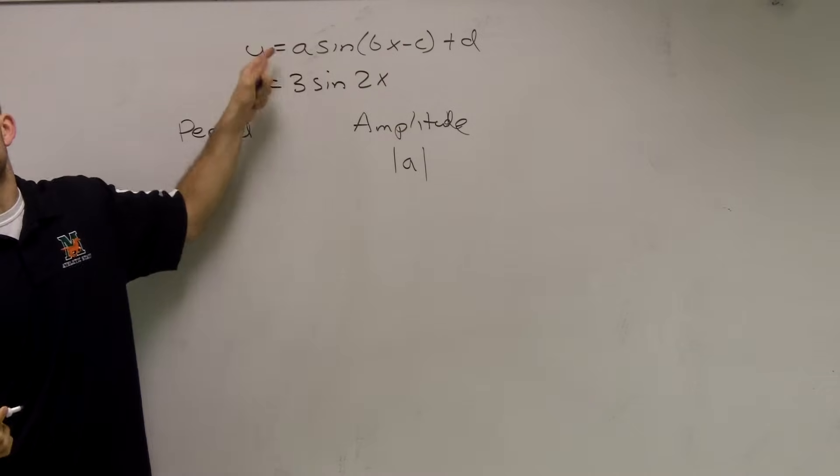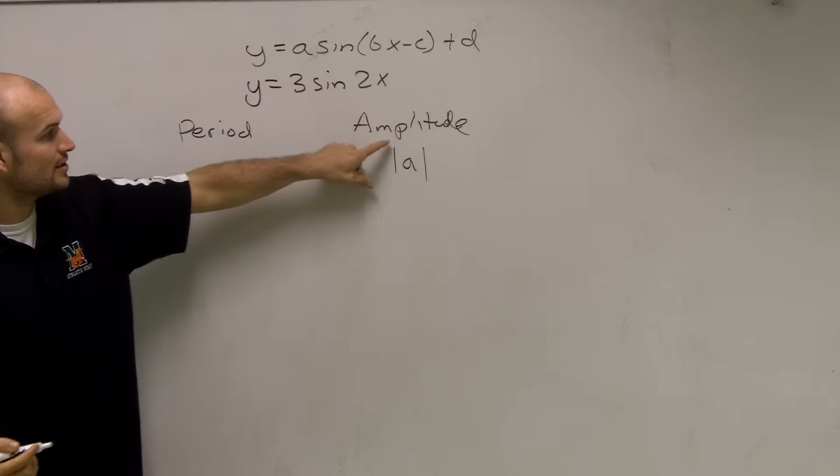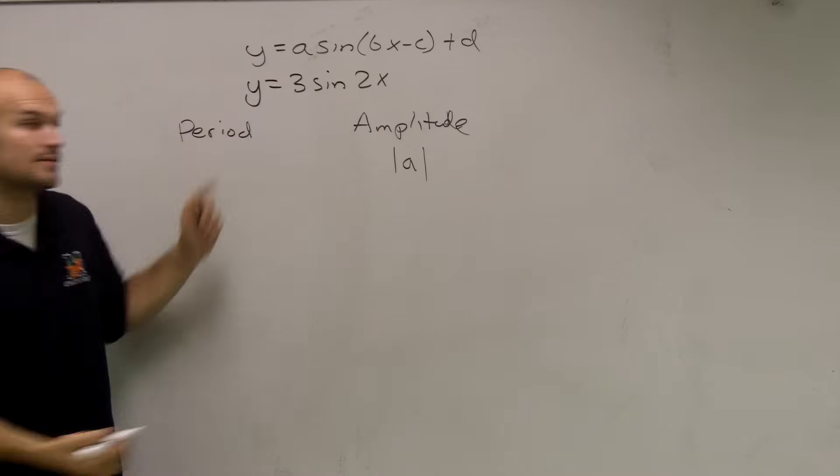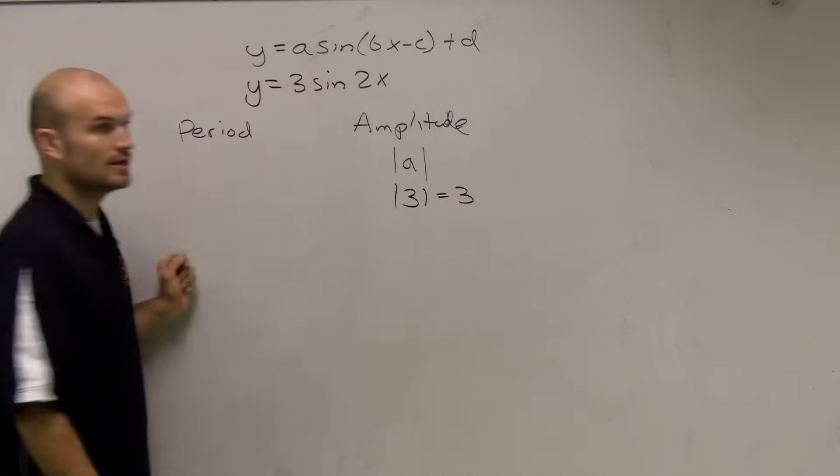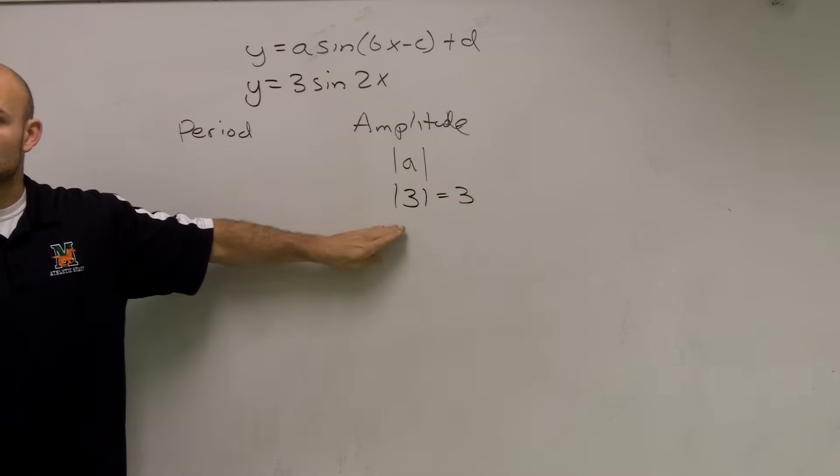So A is going to be my number that's in front of sine. So I go and take a look. So my amplitude is going to be the absolute value of 3. So absolute value of 3 is obviously going to be 3. So therefore, my amplitude equals 3.